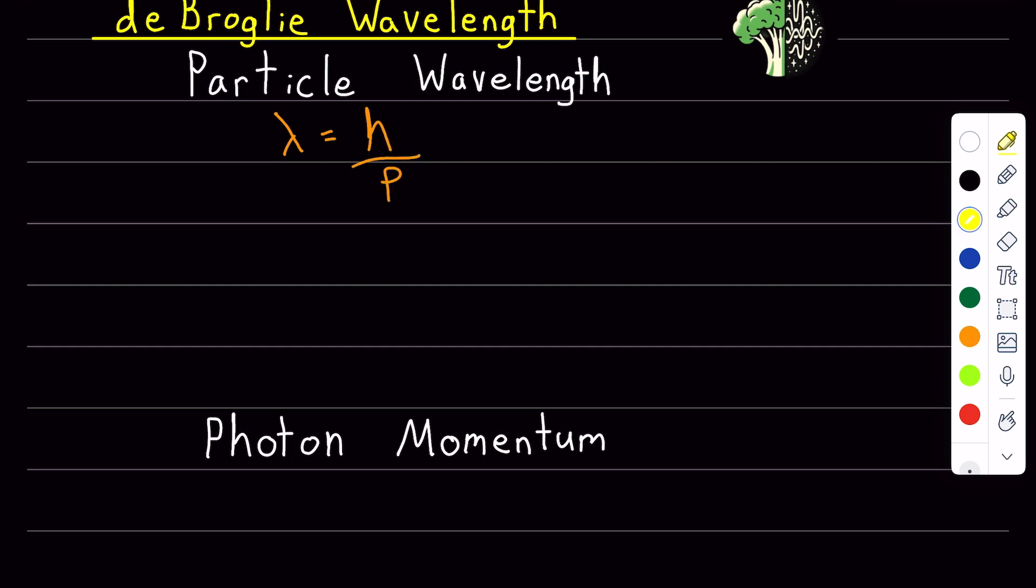Now usually for a particle, we give the momentum as momentum equals mass times velocity. But often when dealing with questions in physics, kinetic energy is going to be involved in the problem somehow.